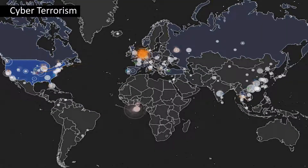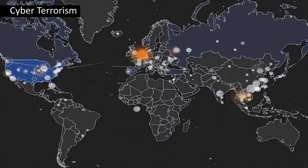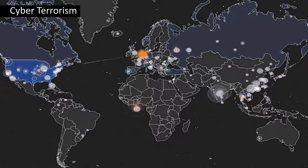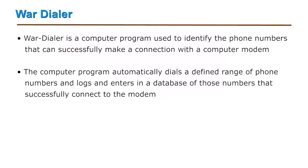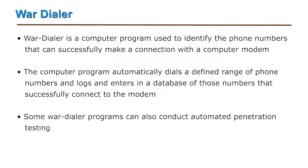Cyber terrorism is basically an illegal act which is politically motivated, using computers and information technology to cause severe disruption or widespread fear in society. Next is war dialer — a computer program used to identify phone numbers that can successfully make a connection with a computer modem. It automatically dials a defined range of phone numbers and logs those numbers that successfully connect to the modem.